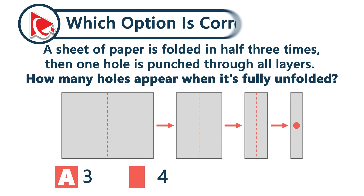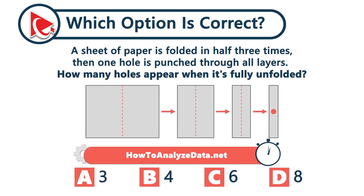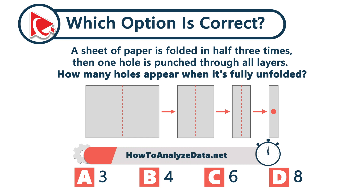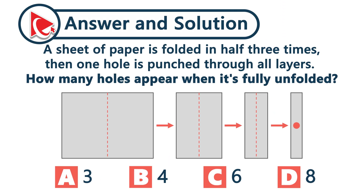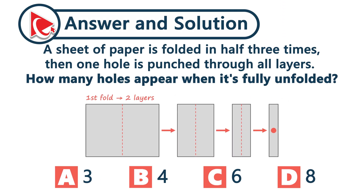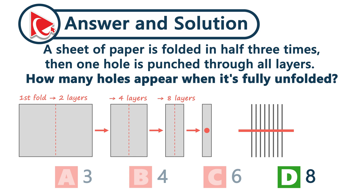A sheet of paper is folded in half three times. Then one hole is punched through all the layers. How many holes will appear when it's fully unfolded? Each fold doubles the layers: one becomes two after the first fold, two becomes four, four becomes eight. One punch through every layer equals eight visible holes when unfolded. The correct answer is choice D — eight.